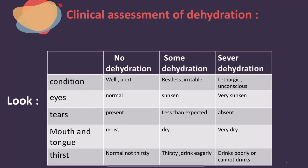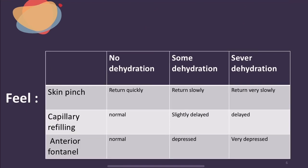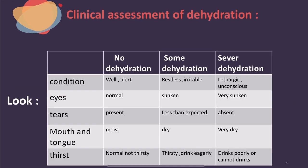In the assessment we proceed systematically: look, feel, and vital signs. Starting with 'look' from top to bottom — first the general condition. If the child is fully alert: no dehydration. If the child is restless and irritable, crying: some dehydration. If the child is lethargic and unconscious, barely moving: severe dehydration.